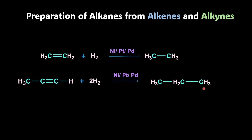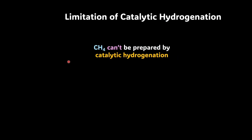In this case, we have taken propyne and what we're getting is propane. Now, my question to you is: can you prepare methane by catalytic hydrogenation? You know that the smallest alkene which is possible is of two carbons, and so is an alkyne. So the answer is no — we can't prepare methane using catalytic hydrogenation.